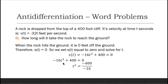To solve for t², we transpose the +400 to the other side, making it -400, then divide both sides by -16. So t² = -400 / -16 = 25, and t = √25 = 5 seconds.